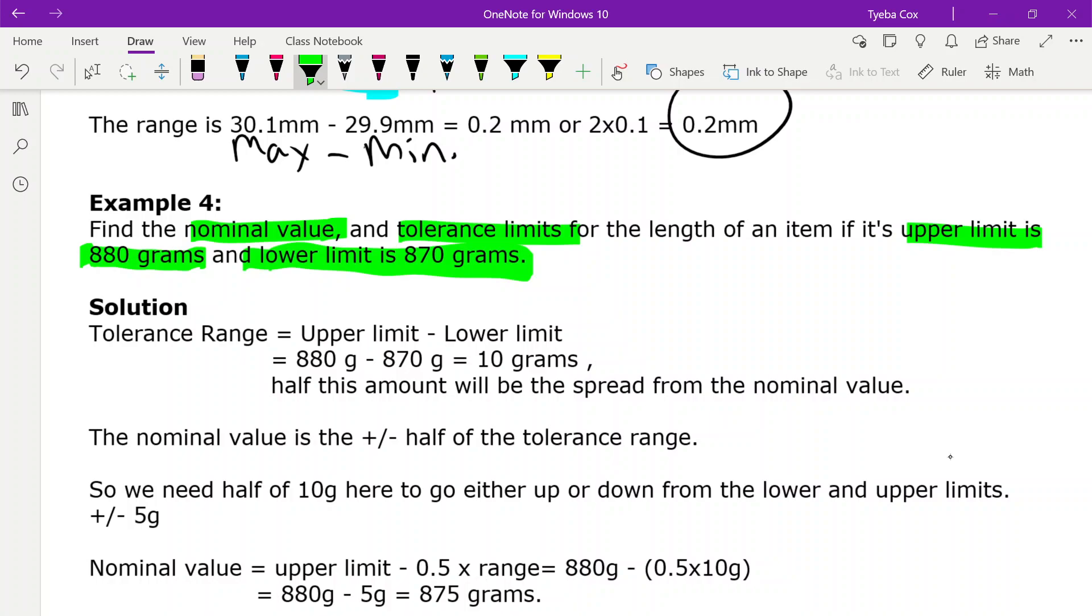So first, let's look at our tolerance range. So let's find our upper limit, and then find our lower limit, and subtract the two from each other. So we get 880 minus 870, and that ends up giving us 10 grams. So here, this is our minimum, and this is our maximum. And if we look at it on a number line, our target measure, we want it to end up being in the middle. So what value is going to be in the middle of that?